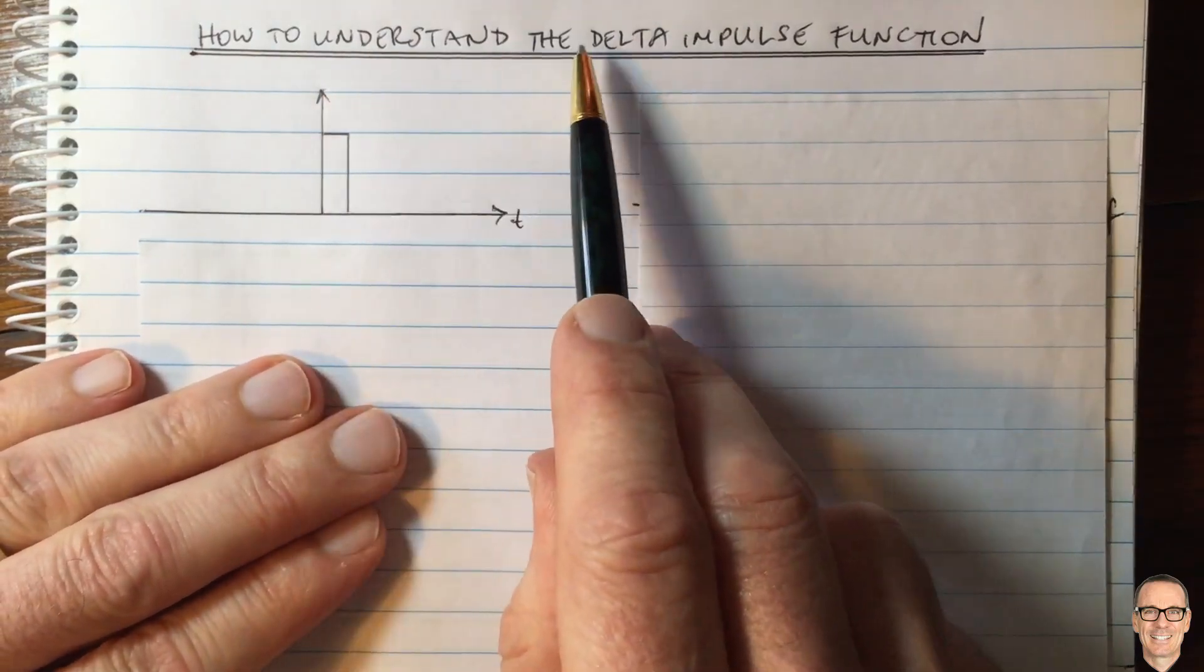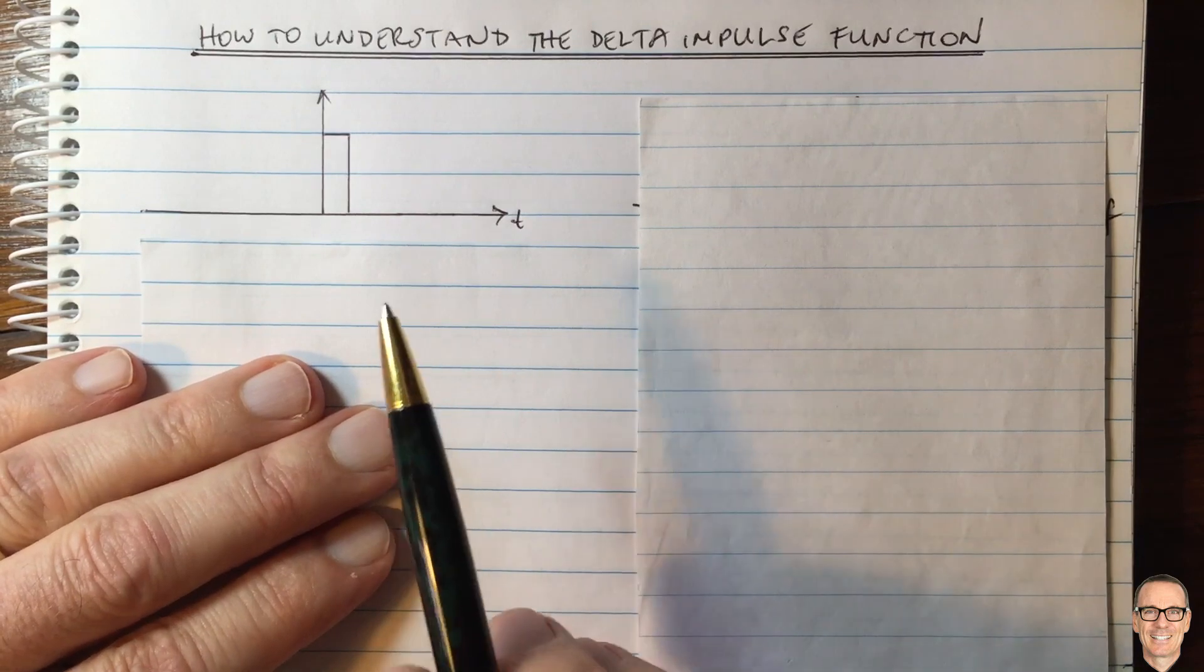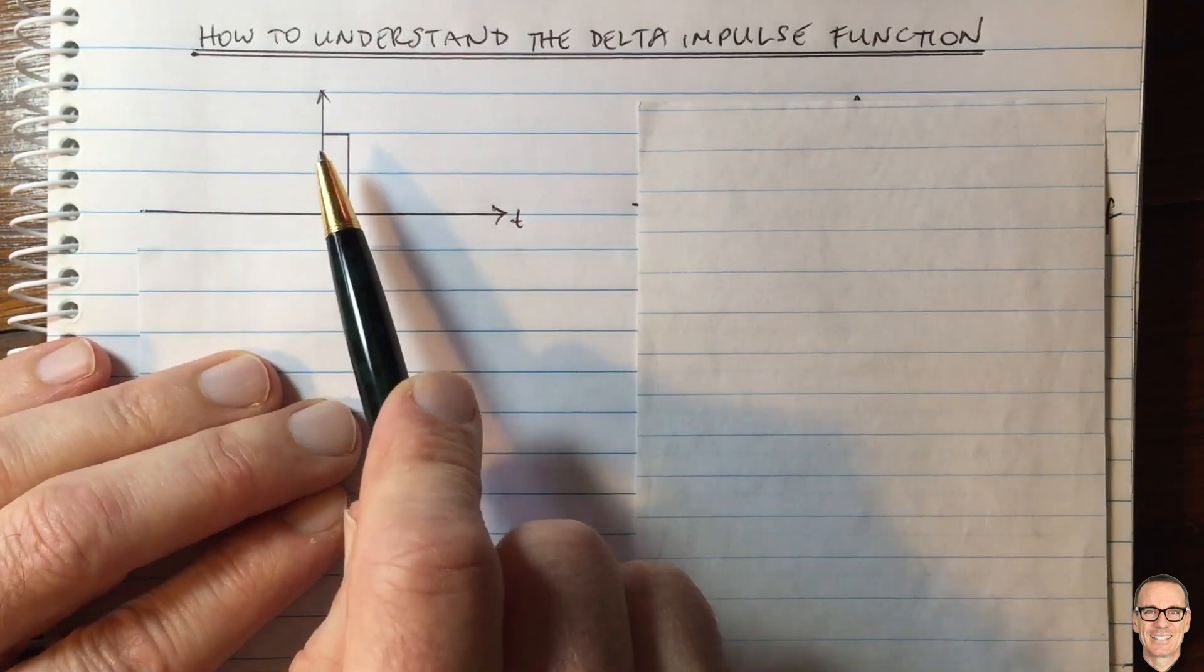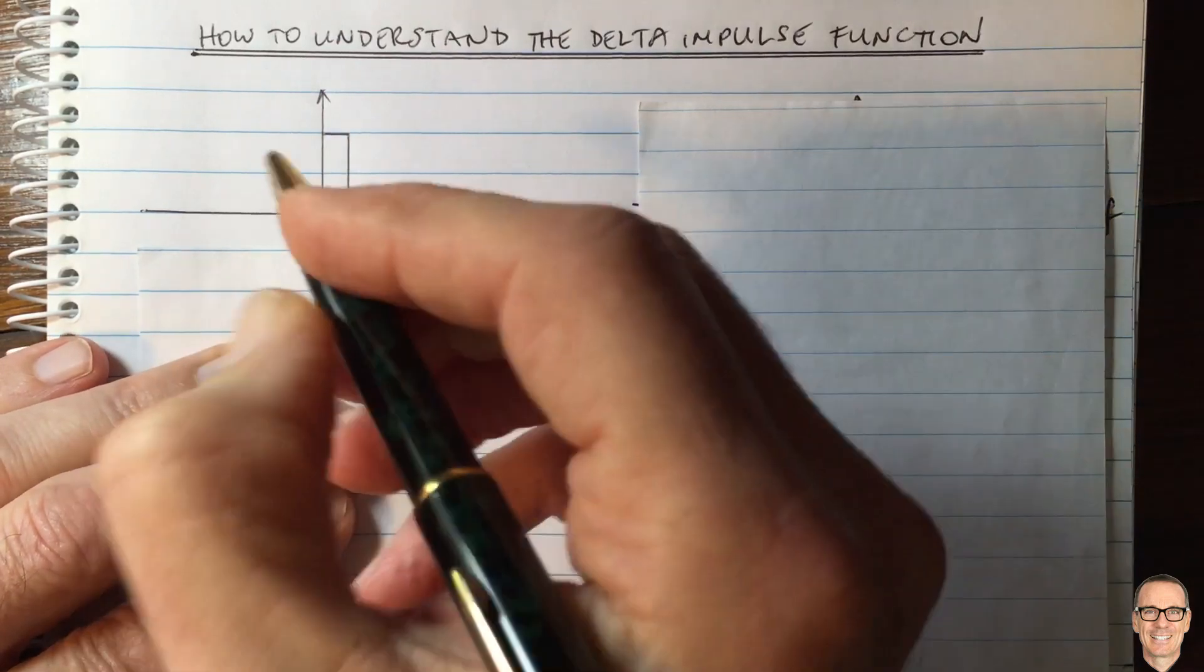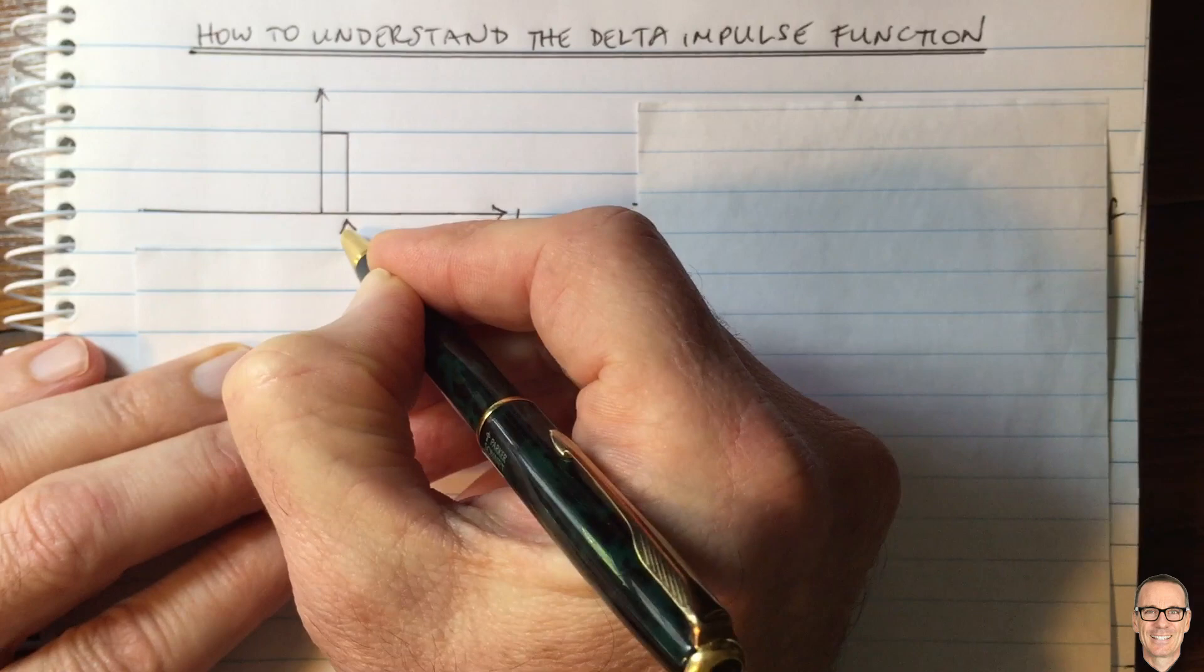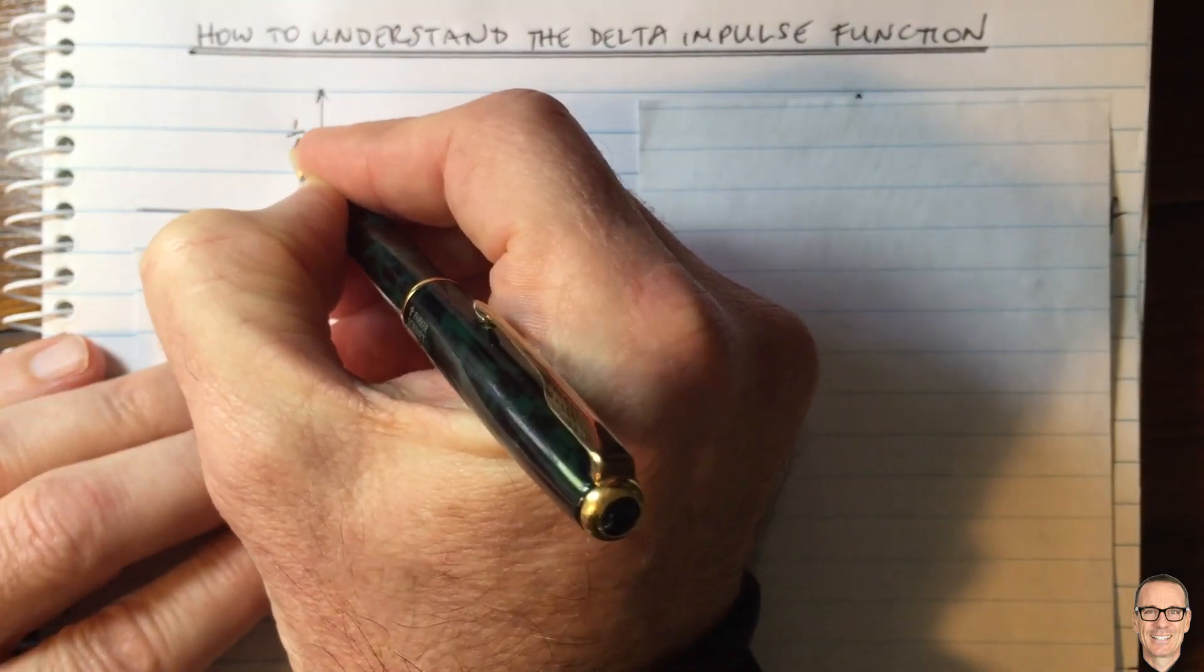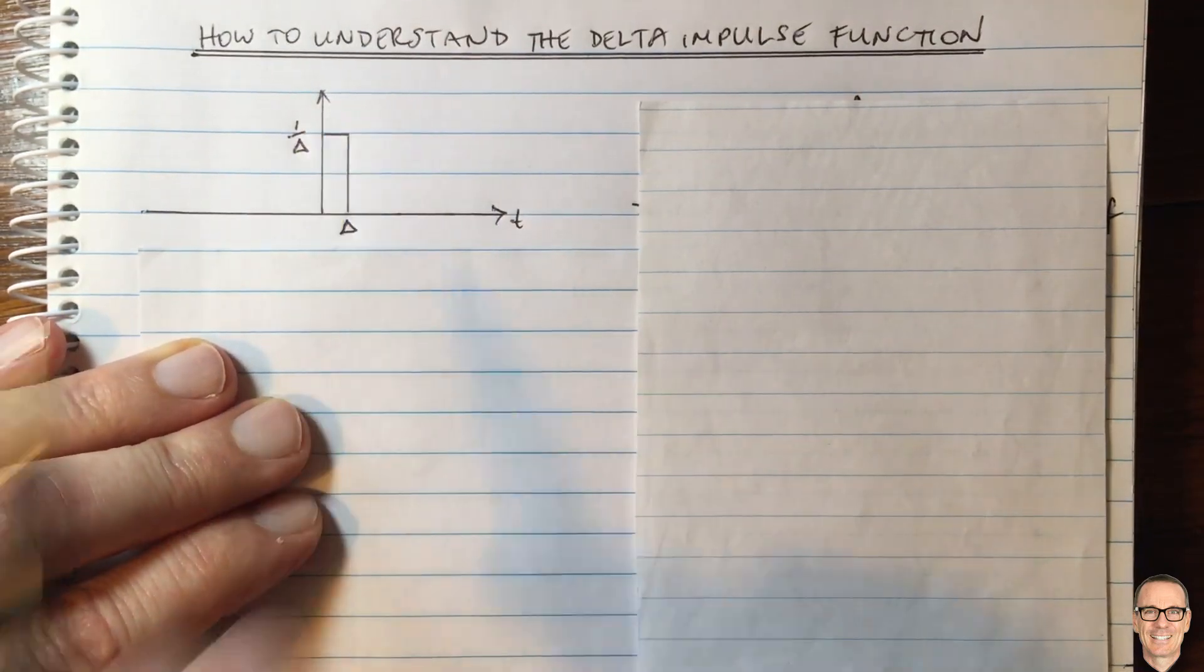So how to understand the delta impulse function? This is often confusing when we're talking about sampling. The best way to think of it is as a very narrow rect function. The width of it is delta, and the height is 1 divided by delta, so the area equals 1.